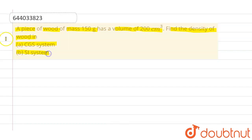In CGS units, the unit of density is gram per centimeter cube, so we have to find out density in gram per centimeter cube in the first part. In SI system of units, the unit is kilogram per meter cube, so in the second part we have to find out density in kilogram per meter cube.